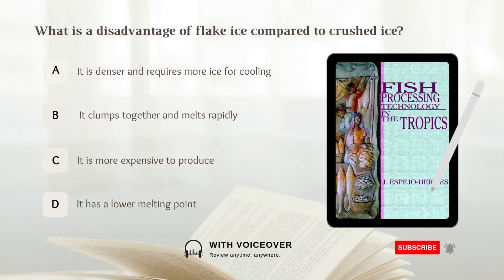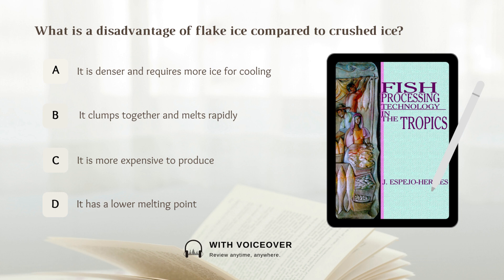What is a disadvantage of flake ice compared to crushed ice? A. It is denser and requires more ice for cooling. B. It clumps together and melts rapidly. C. It is more expensive to produce. D. It has a lower melting point.